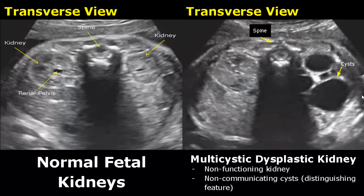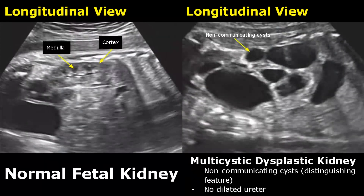Multi-cystic dysplastic kidney is a congenital disease in which we have a non-functioning kidney. The main distinguishing feature is that it has non-communicating cysts — the cysts are separated from each other and are not connected in any way. This feature helps distinguish it from hydronephrosis, which has communicating cysts. Here we have a longitudinal view showing the non-communicating cysts, each with its own wall.